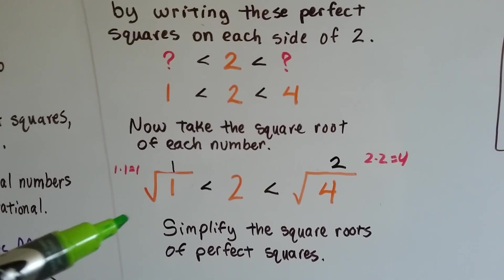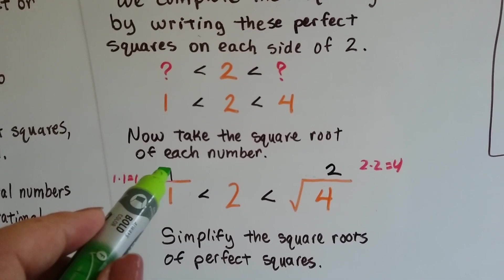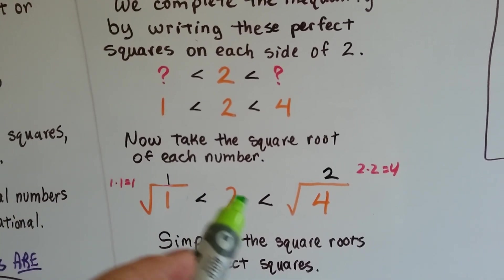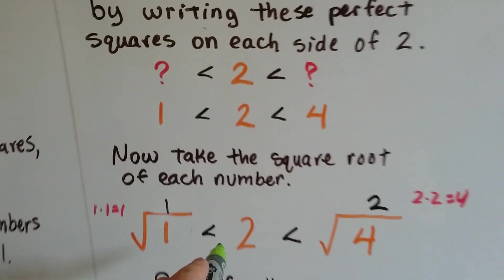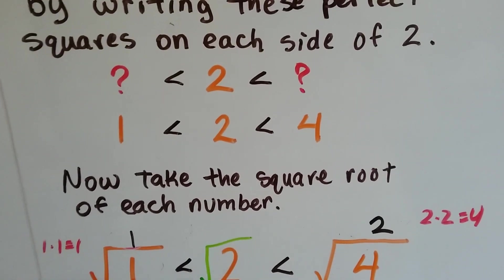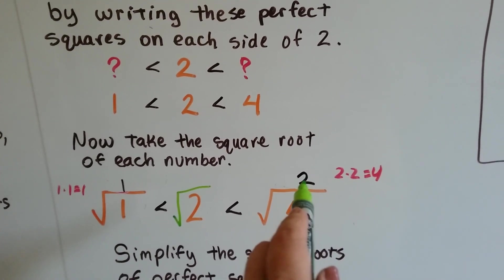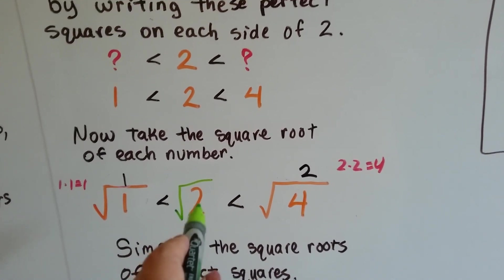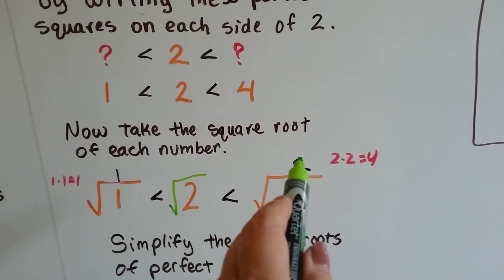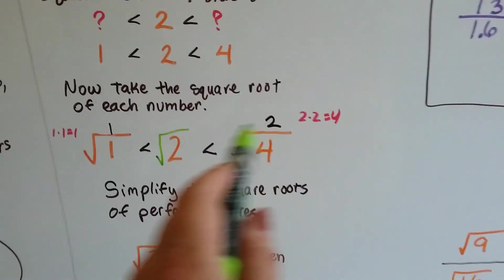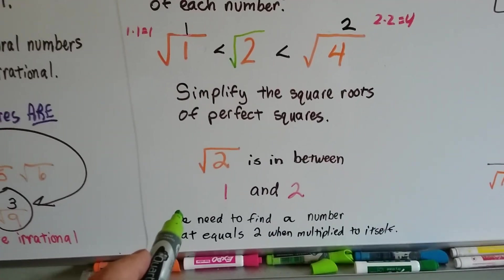So we take the square root of each number. 1 times 1 is 1, so that one's a 1. Then the square root of 2 is going to be in between there, and the square root of 4 is 2. So we know the square root of 2 is somewhere in between 1 and 2. That's all we know.